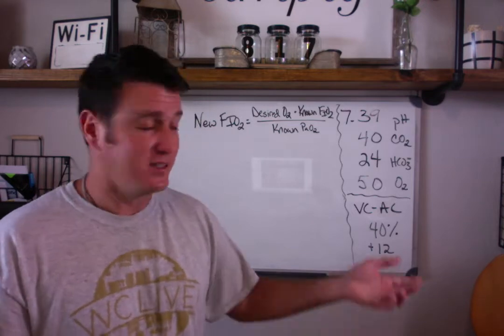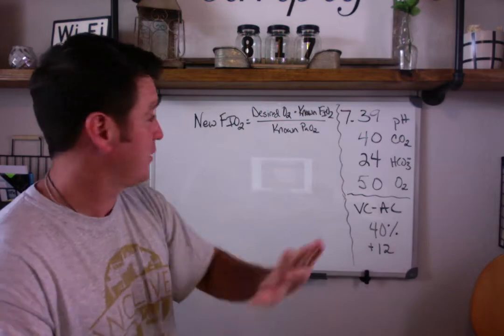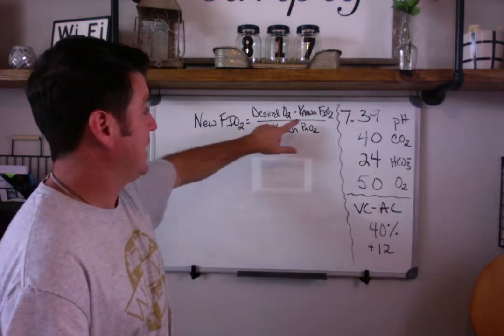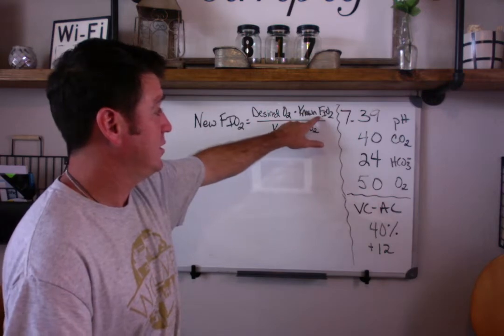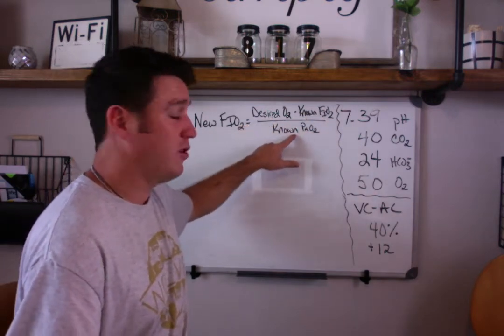You know exactly where you need to put this FiO2 to get the PaO2 that you desire. This is the formula. It looks much like the ventilation formulas except there's a slight difference. Your new FiO2 can be calculated by multiplying your known FiO2 by your desired O2 and divided by your known PaO2.